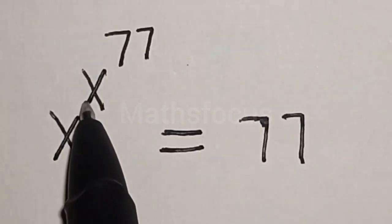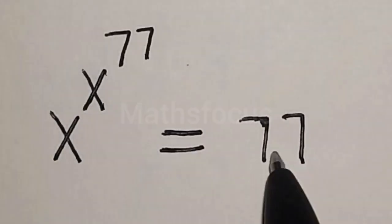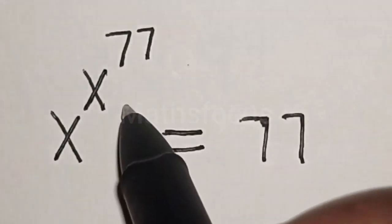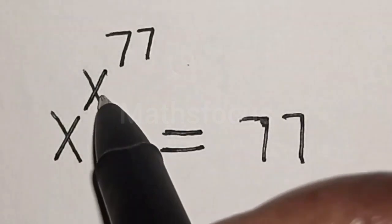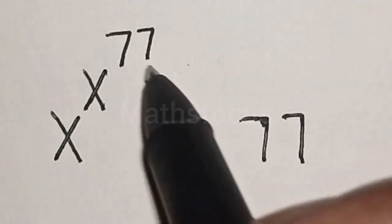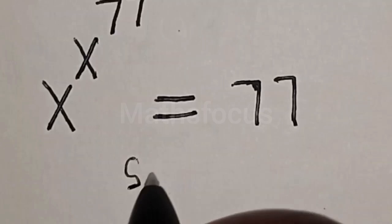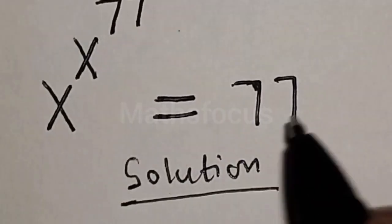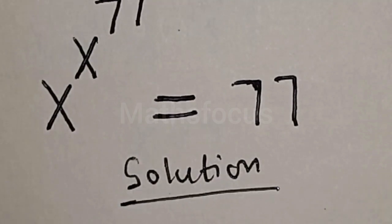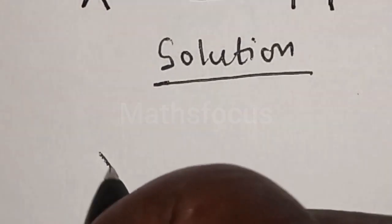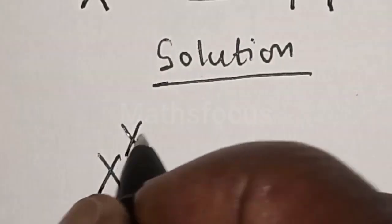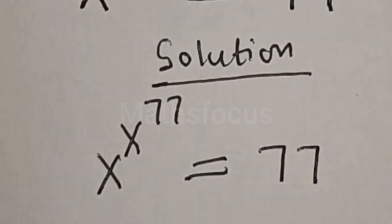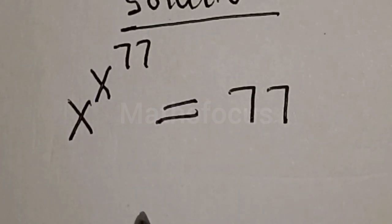We have the equation x raised to the power x raised to the power 77, which is equal to 77. We want to find the value of s from this given equation.